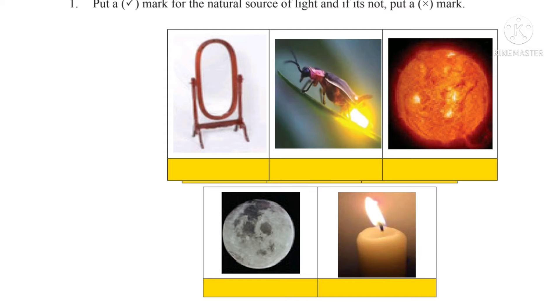Put a tick mark for the natural source of light and if it is not, put a cross mark. These are the pictures of natural source of light. This is a natural source of light which is shown here. Next is now Suryan, the Sun.